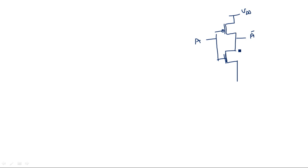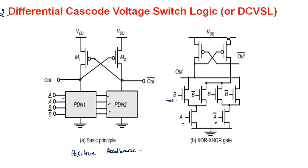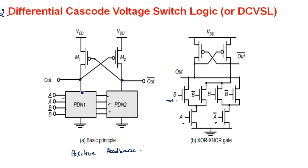What is static current flow? Consider a CMOS inverter with a PMOS and NMOS transistor connected together. In the CMOS inverter there are five regions of operation. At region 3, both PMOS and NMOS transistors are in the on state simultaneously, creating a current path from VDD to ground.